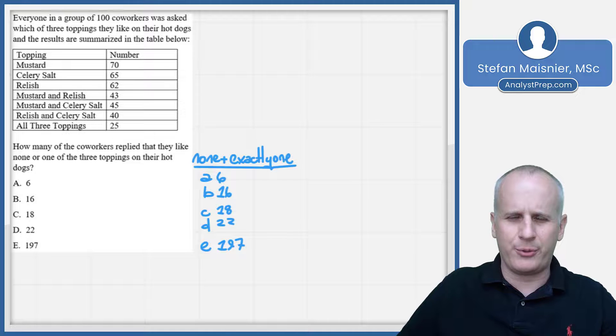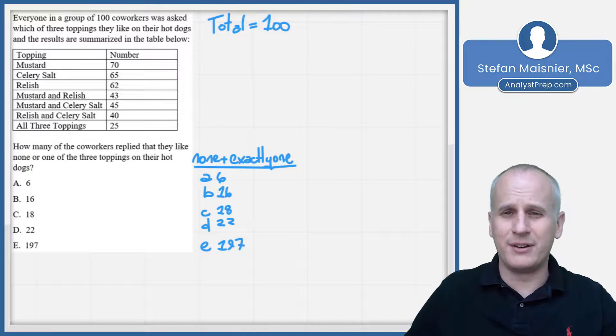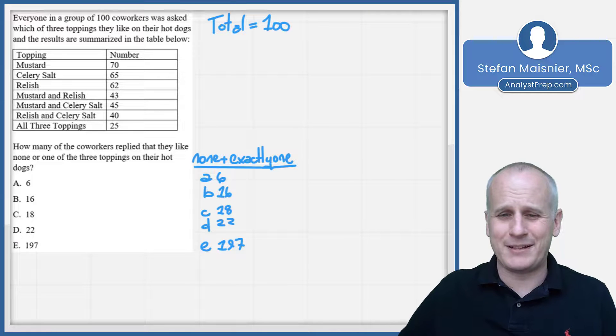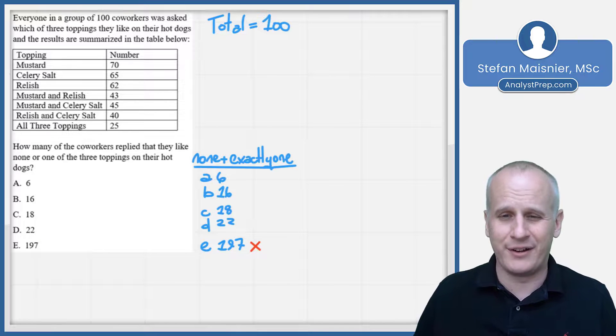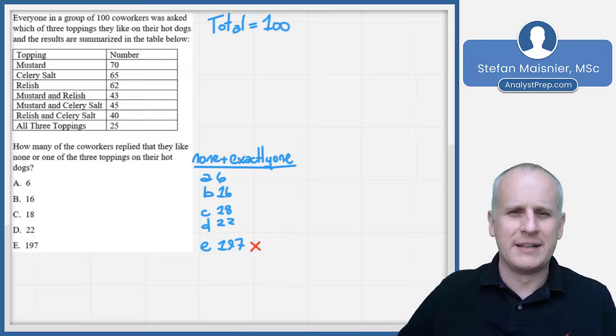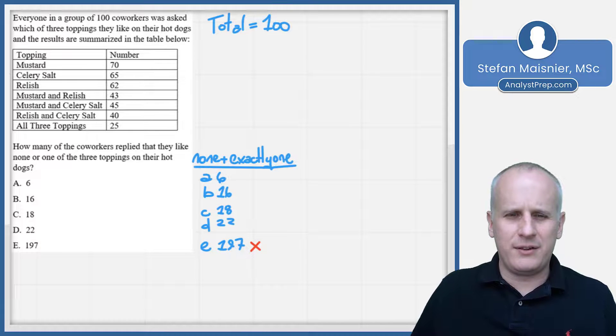So everyone in a group of 100 coworkers, so our total is equal to 100. And remember, always be looking up and making sure that you're eliminating impossible answer choices. It can't be 197 at this point. It has to be fewer than 100. So goodbye to choice E. Then each of these coworkers was asked which of three toppings they like on their hot dogs. And we've got the results summarized in the table.